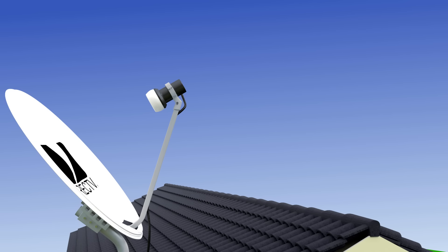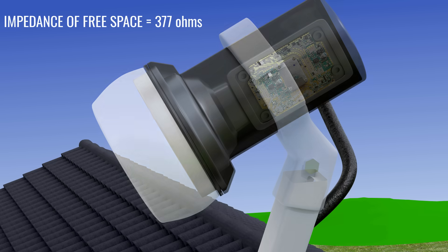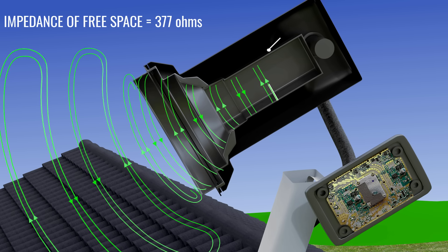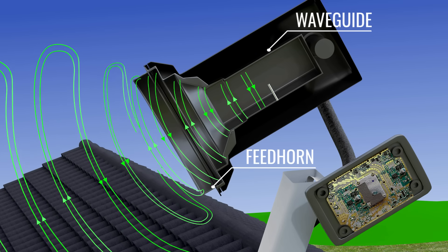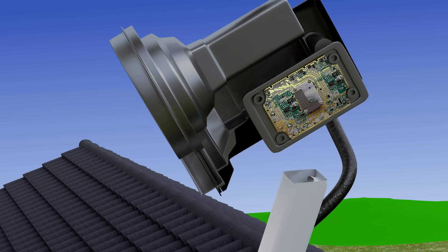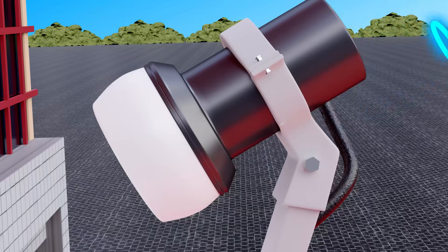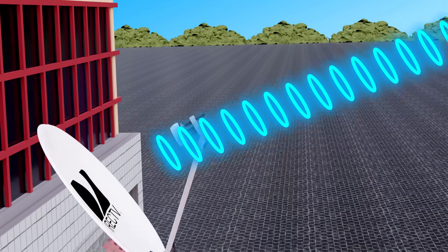A free space has an impedance value of 377 ohms. In a parabolic antenna, a waveguide is used as a transmission line, which has a different impedance value from the free space. That's why a feed horn is also included in a parabolic antenna. This way, the impedance of the waveguide is matched with the impedance of the free space so that the EM waves can be received properly.